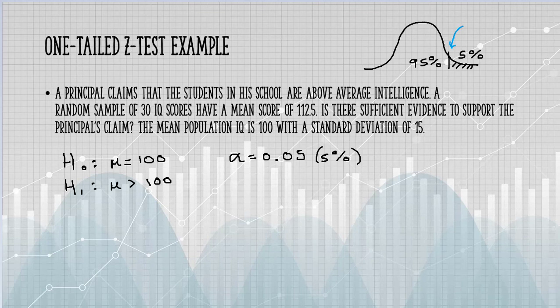What we're interested in is what is this cutoff point here? What separates our 5% alpha level from the rest of the distribution? This cutoff point is a Z critical value, and we can look that up in a Z table.